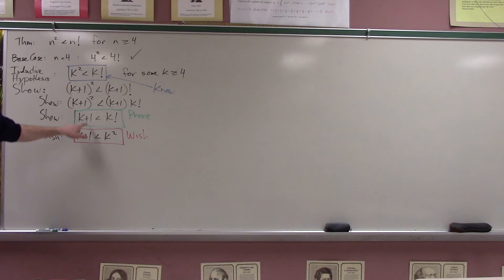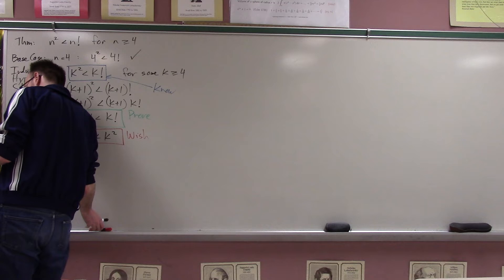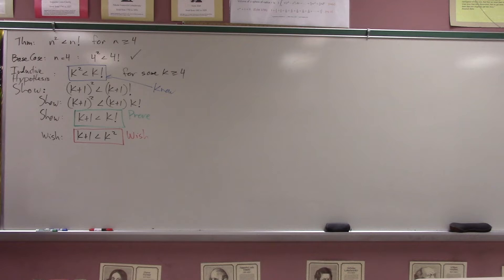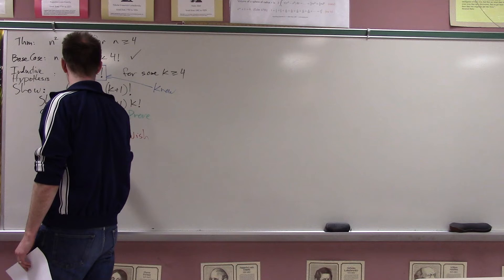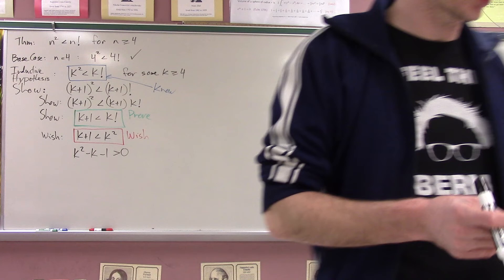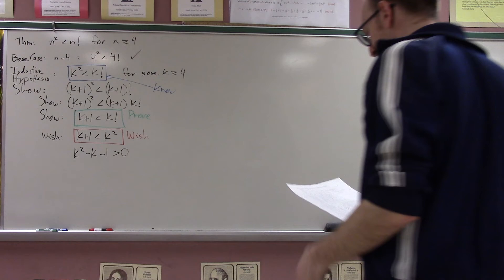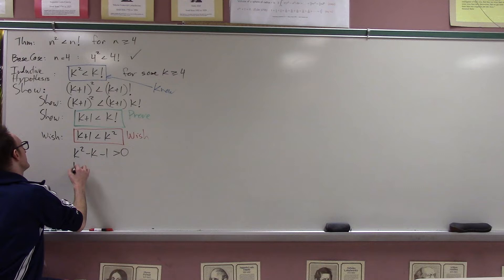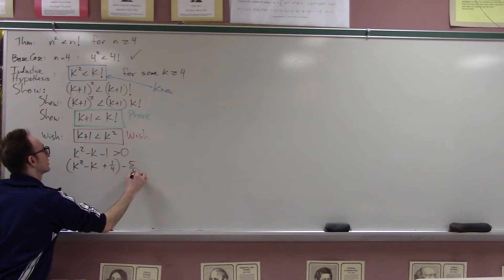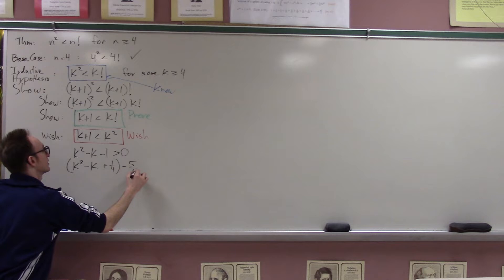Now I just have to prove the wish. The wish is equivalent to showing that k² − k − 1 is positive. The smoothest way is to complete the square: k² − k − 1 = (k − 1/2)² − 5/4. I need to show (k − 1/2)² > 5/4, which is true.